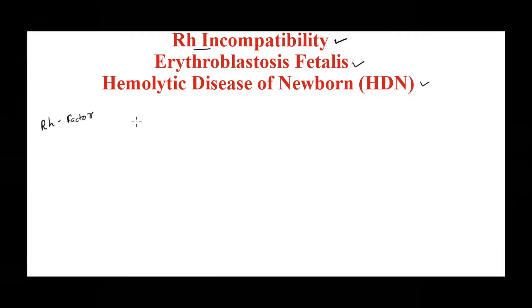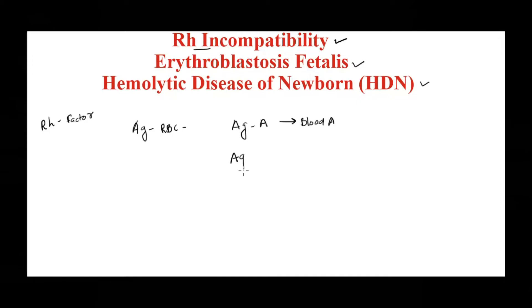As the term says, RH incompatibility means it has something to do with the RH factor. As discussed in the previous video on Bombay blood grouping, certain antigens are present on the RBC. For example, antigen A gives blood group A, antigen B gives blood group B. Along with this, the presence or absence of antigen D determines RH status — antigen D present means RH positive, antigen D absent means RH negative. RH incompatibility is based on this presence or absence of antigen D on the RBC.